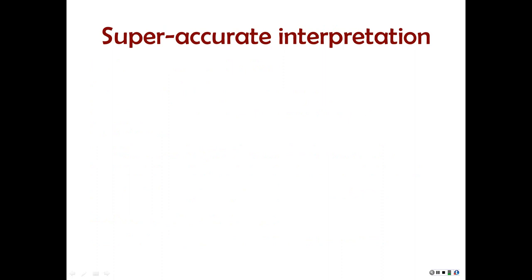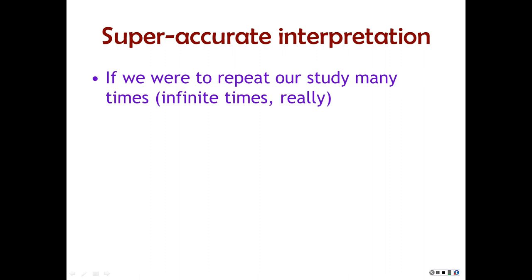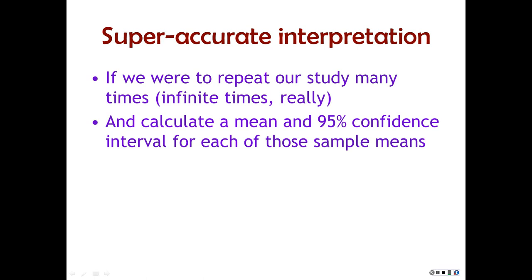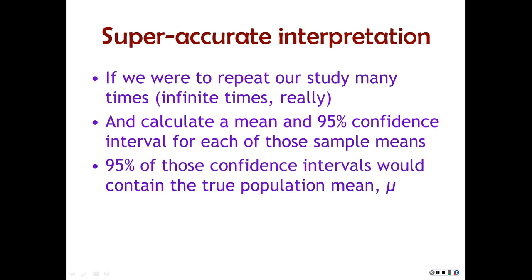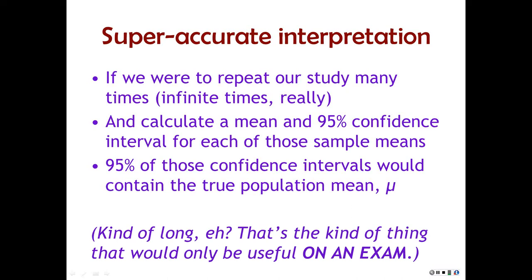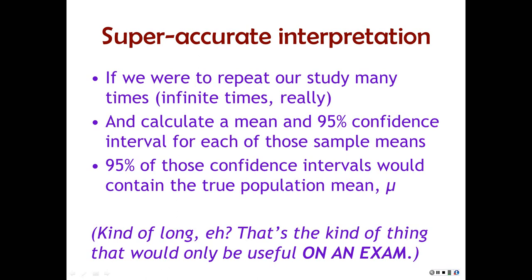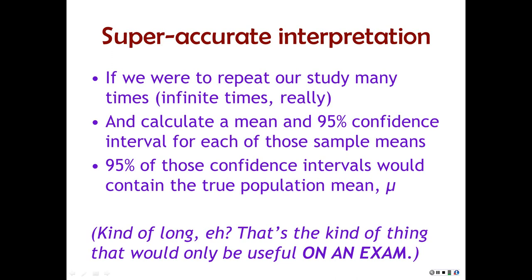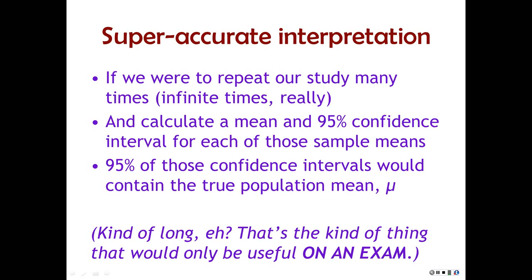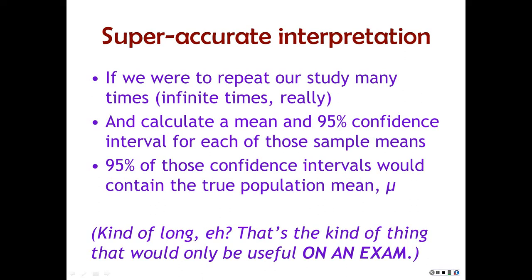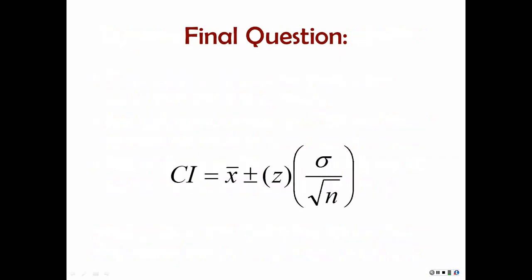The very accurate interpretation of a confidence interval — which we rarely say except when teaching because it takes too many words — is exactly what you just saw in the simulation. If we were to repeat our study many, many times, randomly sampling from the same population and calculating a 95% confidence interval for each sample mean, then 95% of those intervals would contain the true population mean. This does not mean we ever know where the true population mean is, and we never know whether our particular confidence interval is one that contains the mean. You need hundreds of studies to really zoom in with extreme confidence.